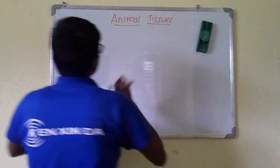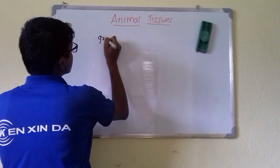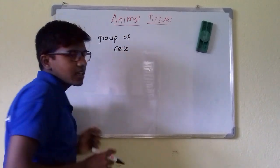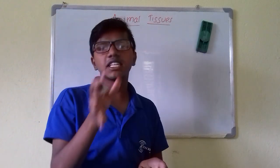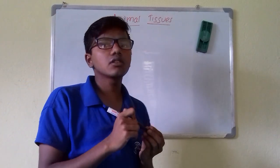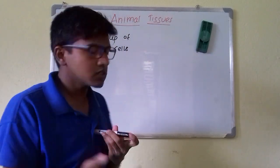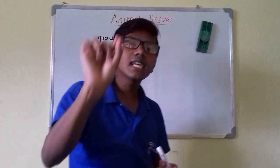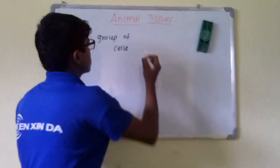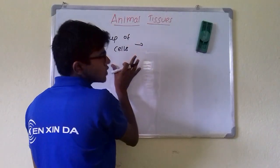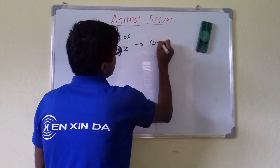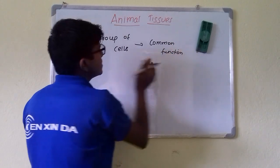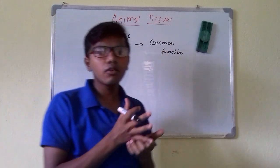So what is animal tissue? Animal tissue is a group of cells that may be similar or not similar in structure. They are formed from embryonic origins but they all have the same coordinated functions. So a group of cells coordinated to form a common function — this is the simple definition of tissue.